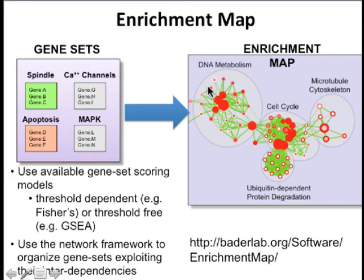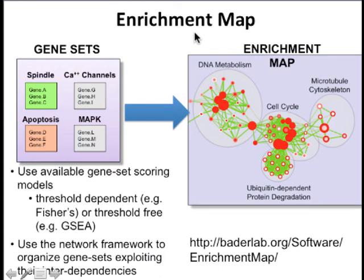There's one other tool like this called ClueGO that's available in Cytoscape. Enrichment Map is a bit more modular because it supports GSEA, while ClueGO just does gene ontology enrichment analysis with the hypergeometric test. We made Enrichment Map to support a wider variety of enrichment analysis methods. The basic idea is that you take your gene sets and visualize them as a network.